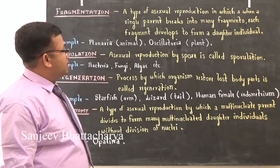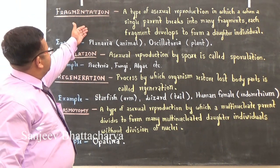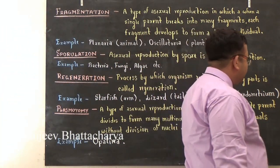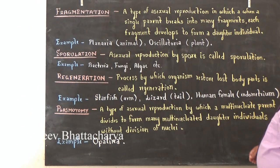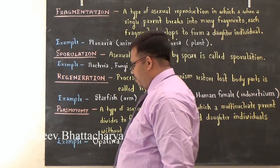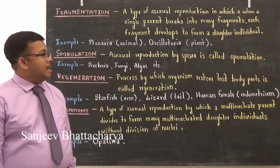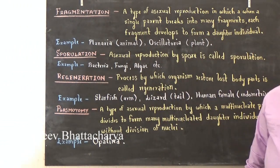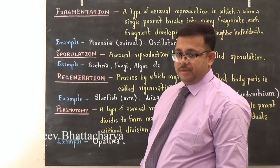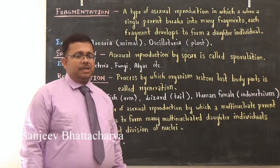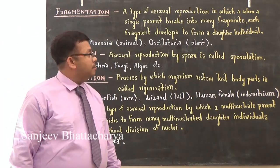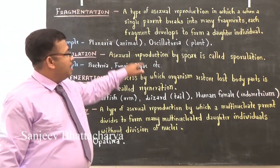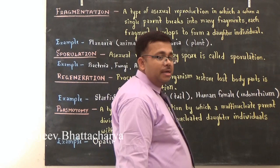Fragmentation is a type of asexual reproduction in which a single parent breaks into many pieces and each piece or fragment gives rise to a new individual of that kind. Fragmentation generally occurs accidentally. It is best observed in Planaria (an animal example) and Oscillatoria (a plant example).